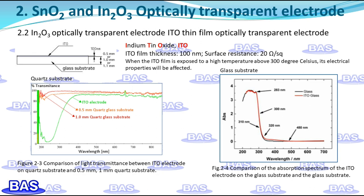Although the ITO film shows transparency and conductivity at room temperature, its conductivity will be severely damaged at high temperature. When the ITO film is exposed to temperatures above 300°C, its electrical properties are affected and the resistance increases more than three times. Figure 2-3 shows the light transmittance comparison between the ITO electrode on a quartz substrate and 0.5 mm and 1 mm quartz substrates. The ITO on the quartz substrate transmits light in the visible range, but light in the ultraviolet range cannot pass, making it difficult to measure absorption spectra in the UV region. Figure 2-4 shows that the absorption spectra of the ITO electrode on a glass substrate and the glass substrate alone are almost the same, indicating that the ITO film has good light transmission properties.